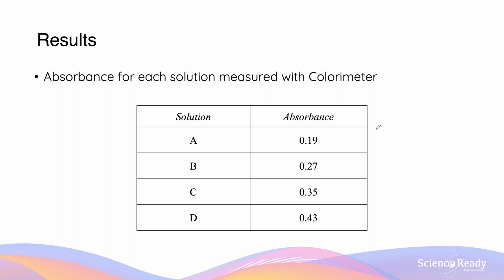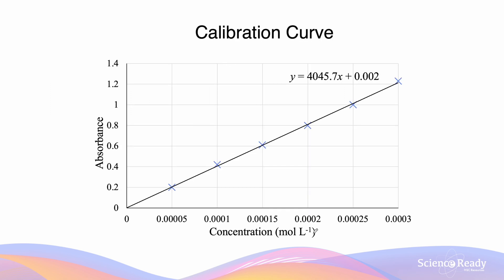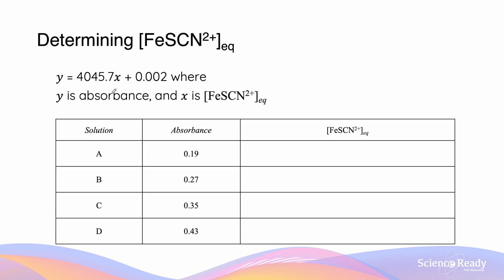When we entered these solutions into the colorimeter, we obtained the following absorbance values: 0.19, 0.27, 0.35, and 0.43. This is where we use our calibration curve to work out the concentration at equilibrium for each absorbance value y. Our formula is y = 4045.7x + 0.002, where y is the absorbance and x is the thiocyanate concentration at equilibrium.